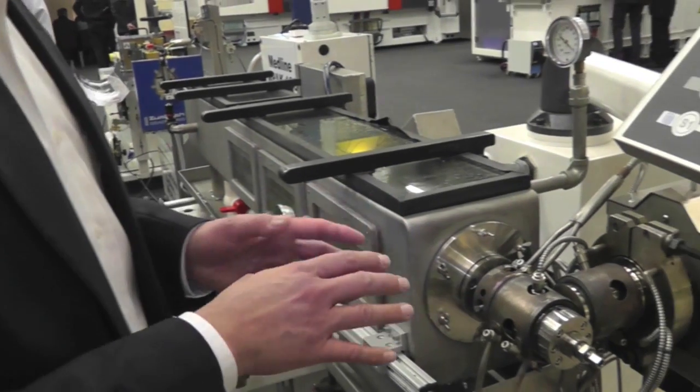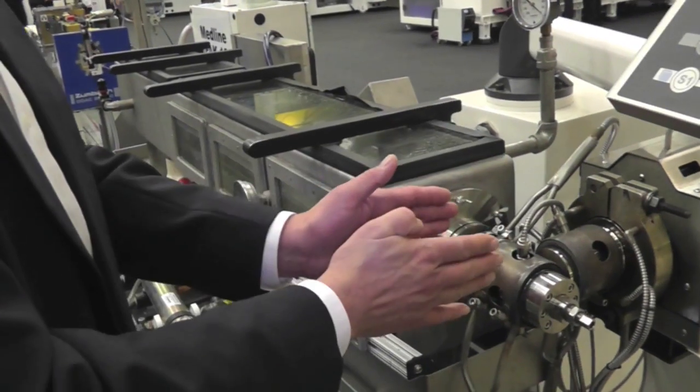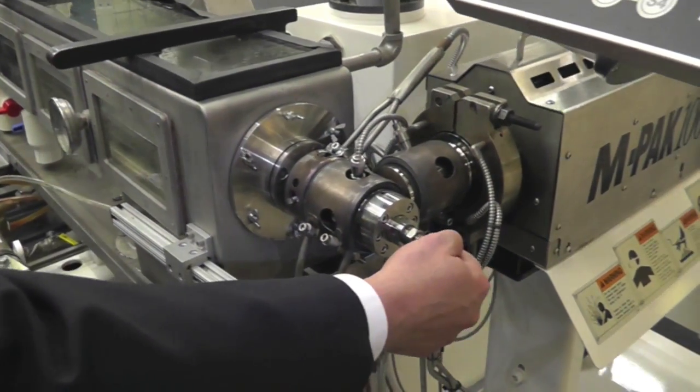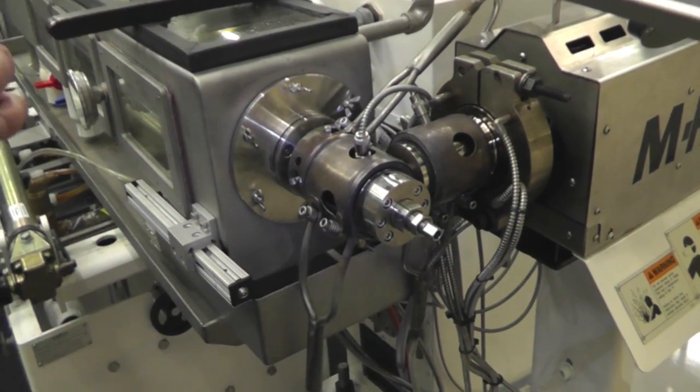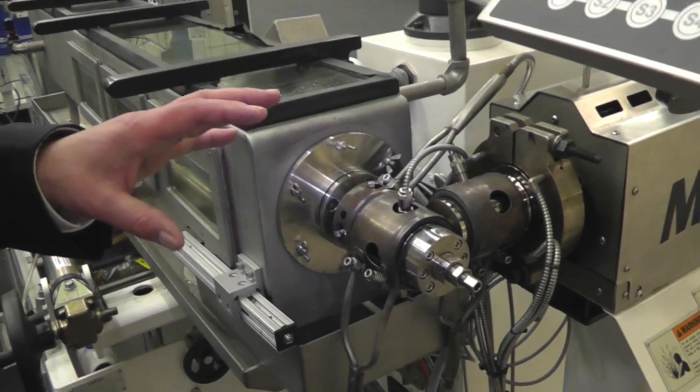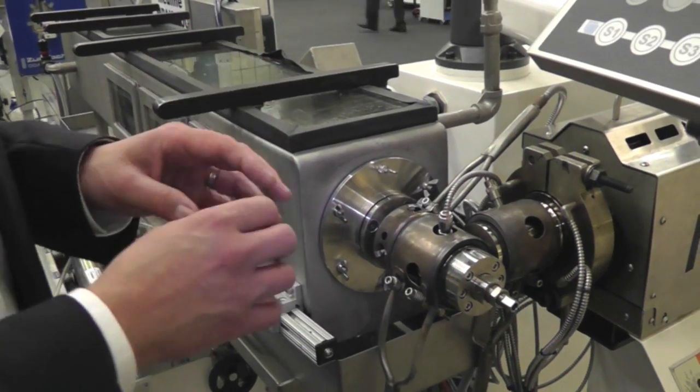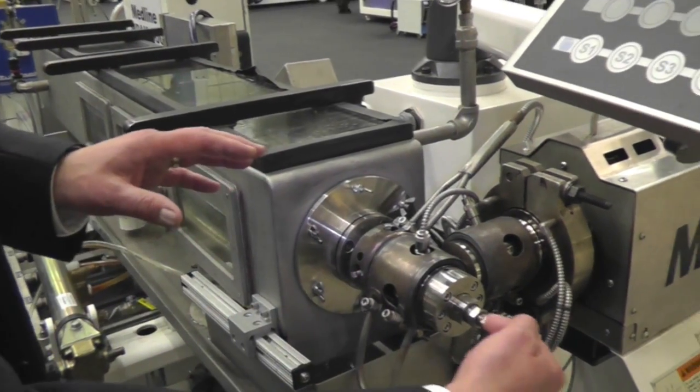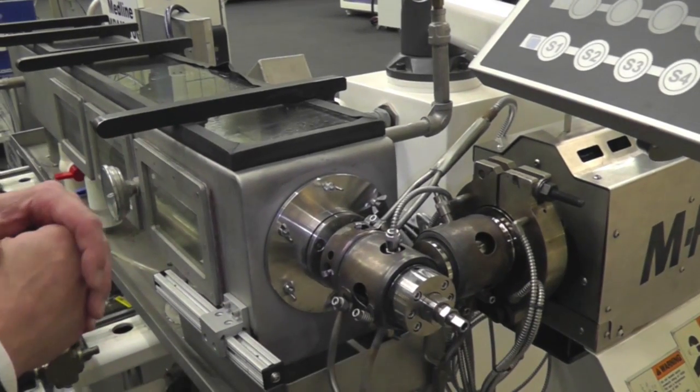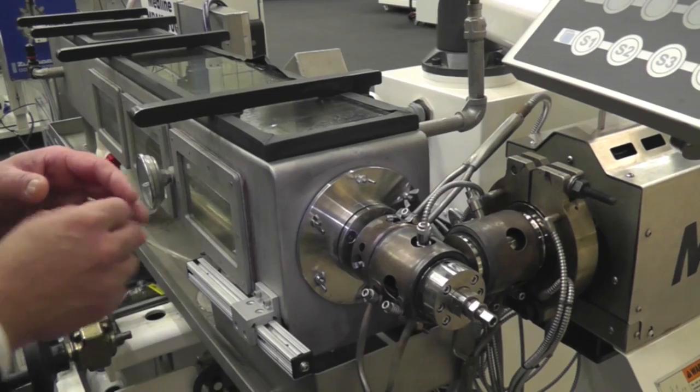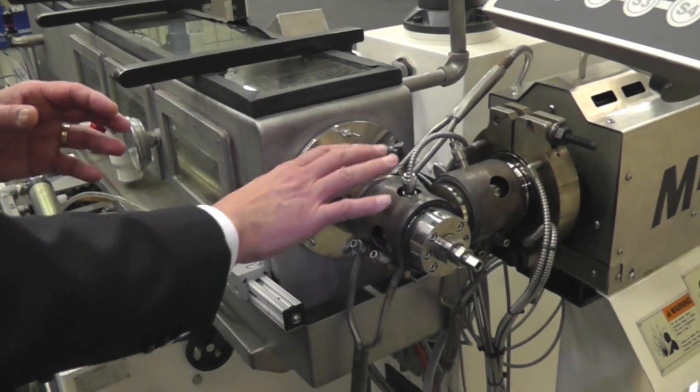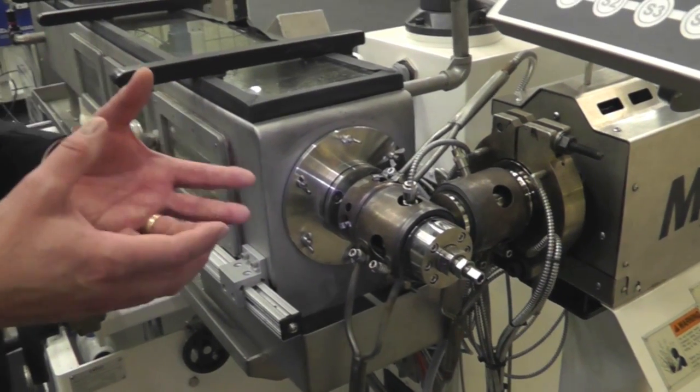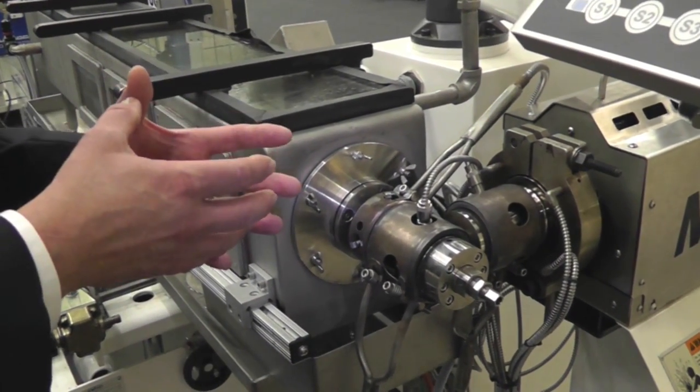This particular die is a cross head, which has the ability to blow air into it if you need to for very small tubes. We could use micro air control for the ID and blow the tube up. It's a very low volume head because we don't want a lot of volume in the tool for degrading the material.